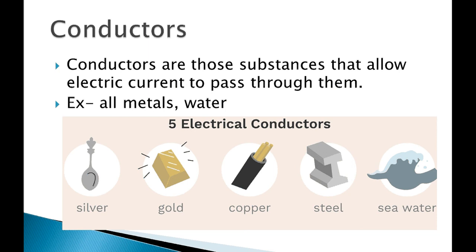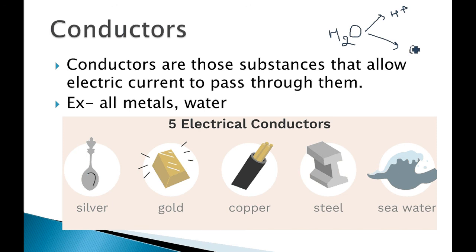Metals are good conductors of heat and electricity, as you know. Water is also a good conductor of electricity. Why? Because water has the formula H₂O, and it splits into H⁺ and OH⁻. So one positive charge and one negative charge are produced — two charges are produced — and ultimately current is produced. So water becomes a good conductor of electricity. Conductors are substances that allow electric current to pass through them. Examples: metals — silver, gold, copper, steel — and water.